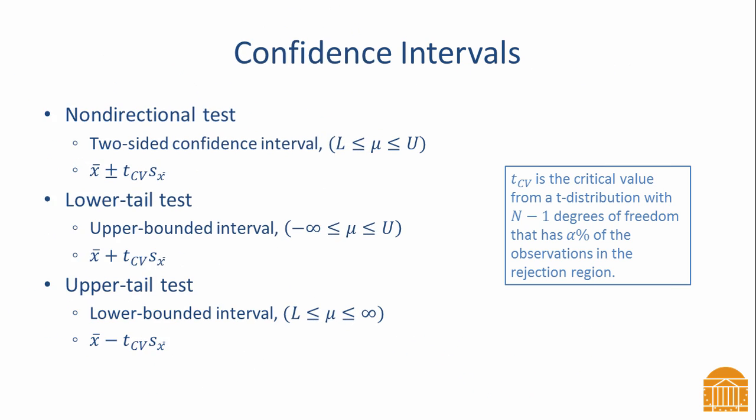Confidence intervals should be computed with any hypothesis test. Confidence intervals are discussed in a separate video. Here you see the specific way to calculate a confidence interval for a one-sample t-test. Multiply the standard error by the critical value to get the margin of error. For a two-sided interval, the margin of error is subtracted from the sample mean to get the lower bound. It is added to the sample mean to get the upper bound.